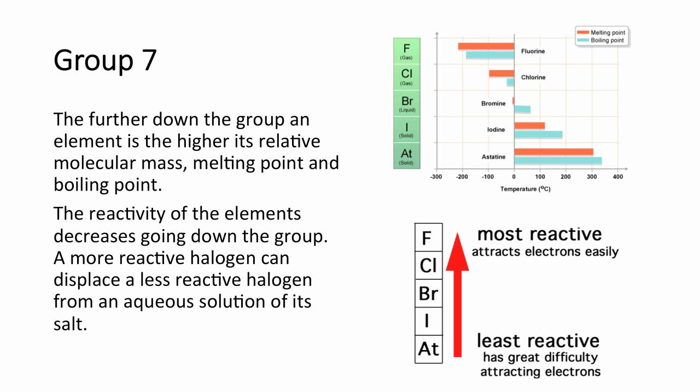Their reactivity is the opposite to group 1: as you go up the group, halogens become more reactive. Because they are in group 7 they are trying to attract an electron rather than lose one. Fluorine is the most reactive because it has the least shielding and the smallest atomic radius, giving it the greatest nuclear attraction.